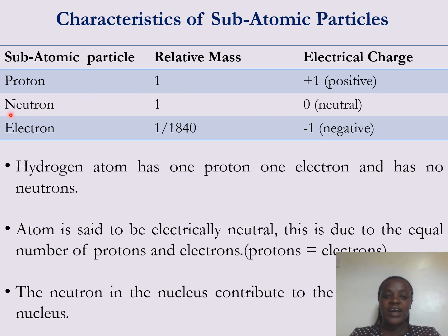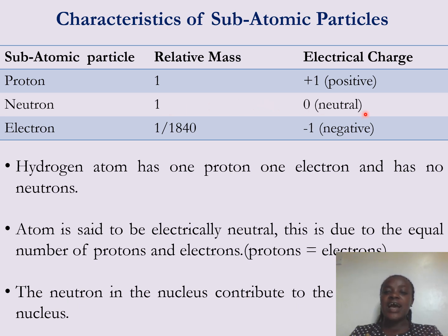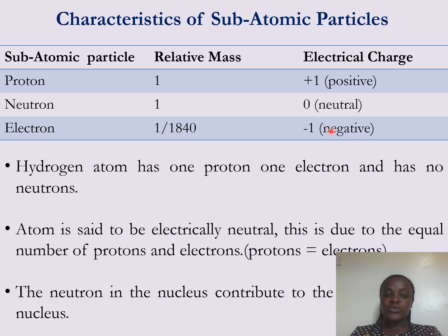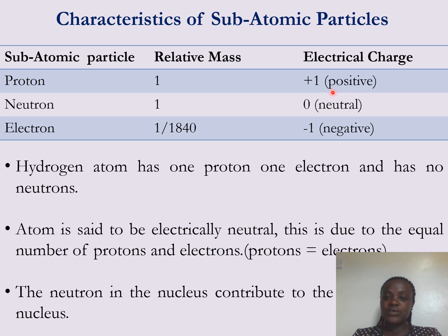The neutron is the third subatomic particle of an atom. It has a relative mass of one. It is neither positive nor negative — it is neutral. A neutron has no charge.